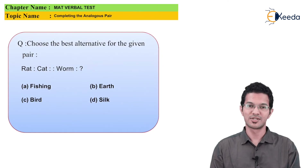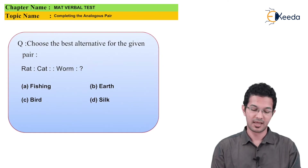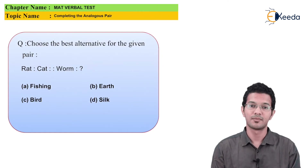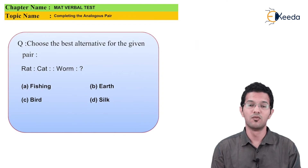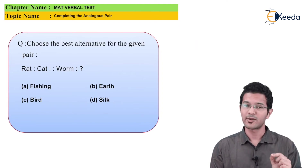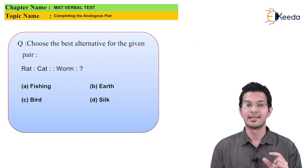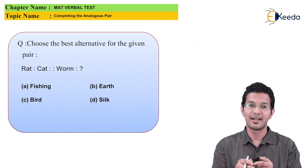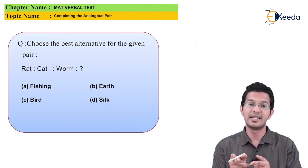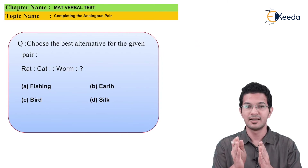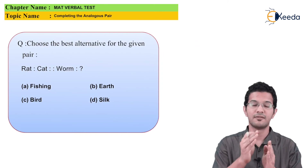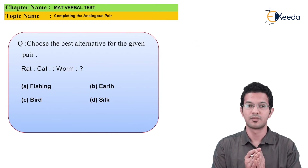The second MCQ says: Rat is related to Cat. Hence, Worm is related to what? When we talk about Rat and Cat, there is a clear relationship — Cat is eating Rat. So the second is eating the first.